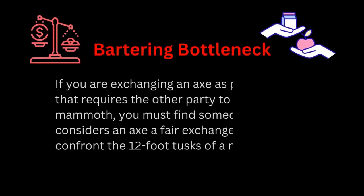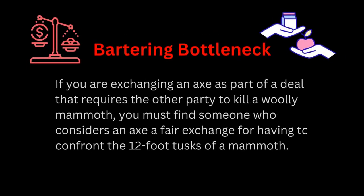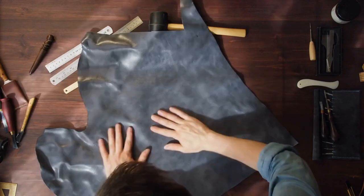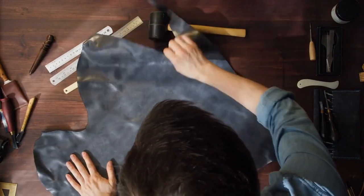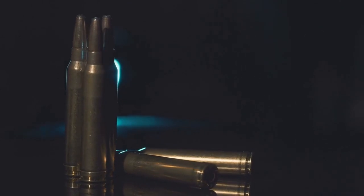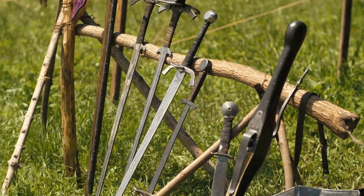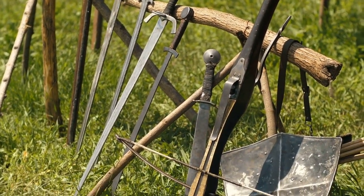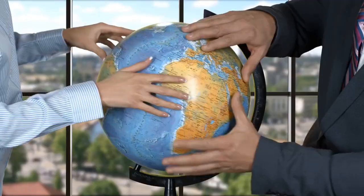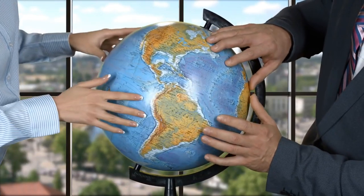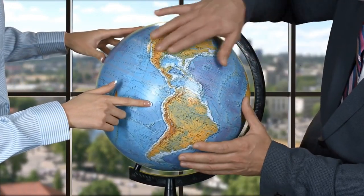Nevertheless, these arrangements required time. If you are exchanging an axe as part of a deal that requires the other party to kill a woolly mammoth, you must find someone who considers an axe a fair exchange for confronting the 12-foot tusks of a mammoth. If this fails, you would have to modify the terms of the deal until someone agrees. Over the centuries, a currency based on easily traded items such as animal skins, salt, and weapons emerged. This merchandise was the medium of exchange, even though the value of each item was still negotiable in many cases. This trading system spread across the globe and still exists in some parts of the world today.